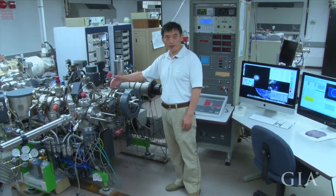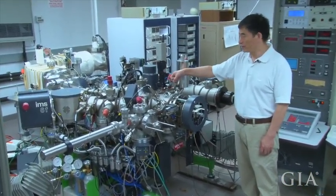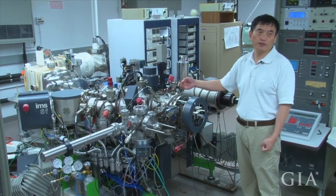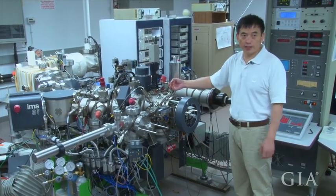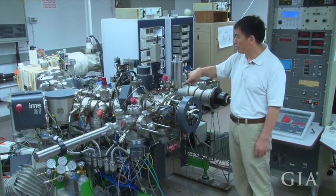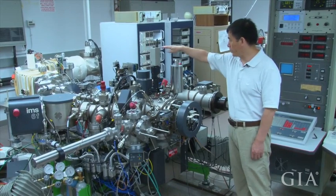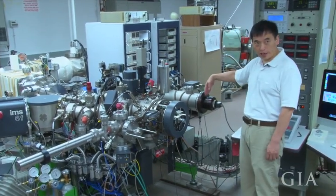The target is sitting here and the primary ion is a cesium ion. It's focused to about 15 microns and hits the sample, then the secondary ions are extracted and detected over here.